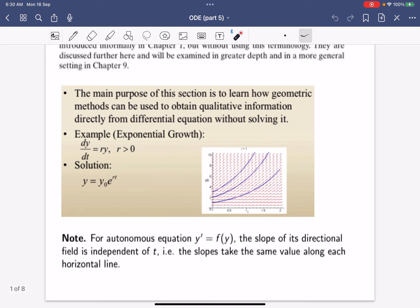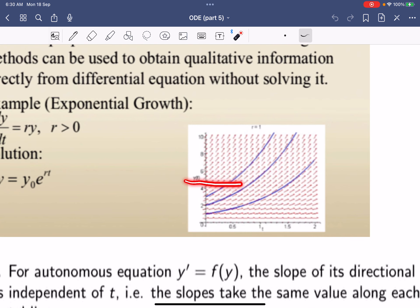Here's the important note: for autonomous equations, the slope of this directional field is independent of t, and so along this y, all the slopes here are equal.